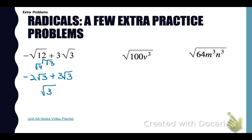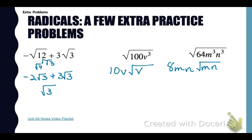In our next problem, we're taking the square root of 100V cubed. The square root of 100 is 10, and then I can take out one group of 2 V's with 1 V left underneath. For the square root of 64M cubed N cubed, the square root of 64 is 8, and then there's one group of 2 M's and one group of 2 N's that I can take out with 1 M and N left underneath.